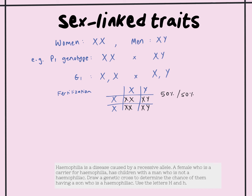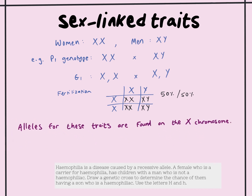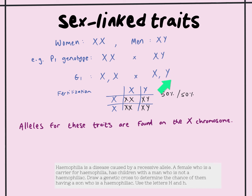Sex-linked traits are called sex-linked because the alleles for these traits are found on the X chromosome, not on the Y chromosome. The Y chromosome is physically smaller than the X, so it contains fewer genes and therefore fewer alleles.